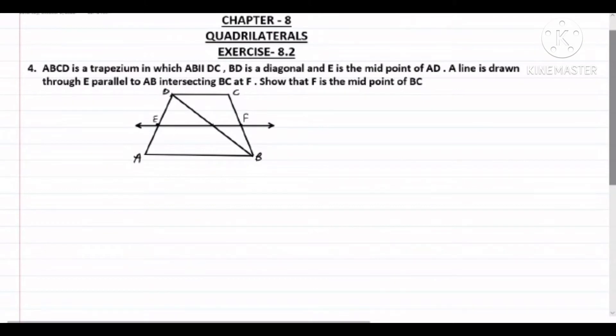Now see question number 4 of exercise 8.2. What is the question? I have given ABCD is a trapezium in which AB is parallel to CD, and E is the midpoint of AD. A line is drawn through E parallel to AB intersecting BC at F. We need to show F is the midpoint of BC.